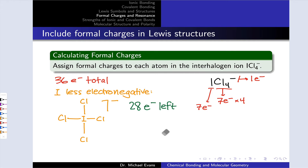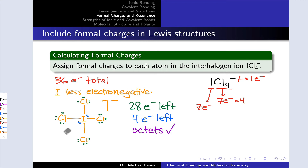To account for the remaining 28 electrons, we place three pairs around each chlorine to satisfy the octet rule. Counting this up, we still have four electrons left. Because we've already satisfied the octet on the chlorines, we take those four electrons and place them on the central iodine atom. This gives us a valid Lewis structure for ICl4 minus. It's worth noting that this molecule involves an exception to the octet rule: while all four chlorines have octets, the iodine has 12 electrons around it — two, four, six, eight, ten, twelve — making this a hypervalent molecule.